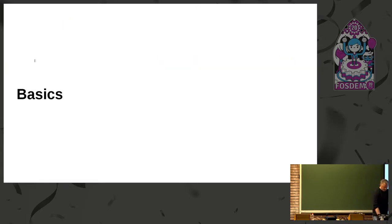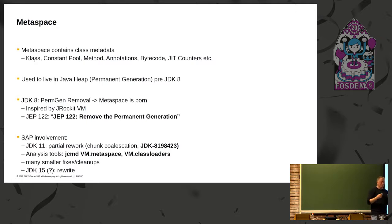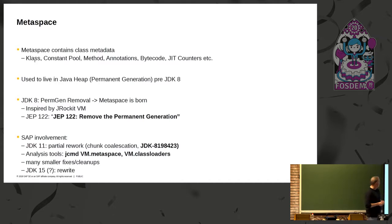Some basics first. Metaspace is a memory region within the Hotspot VM which contains class metadata. Class metadata is basically everything contained within the class file, sucked up and digested by the VM and then rolled out into runtime for easy consumption — things like constant pool, methods, annotations, but also purely runtime stuff like JIT profile counters and so on. Notably, for instance, the code cache is not there.